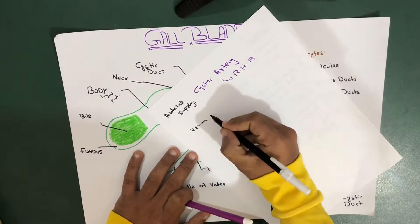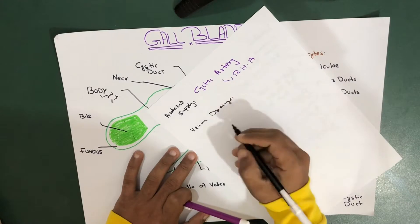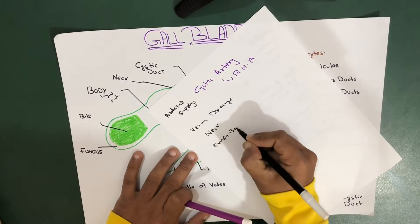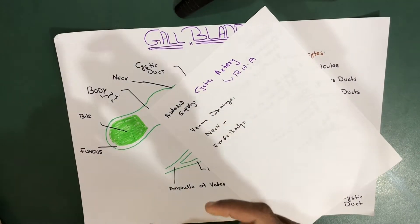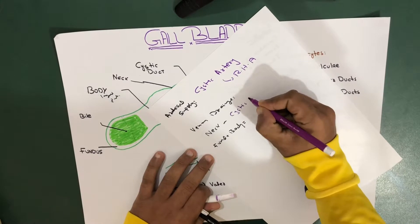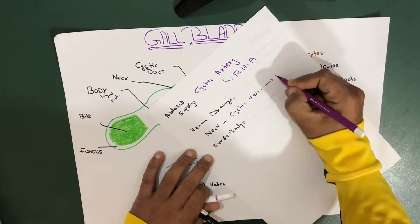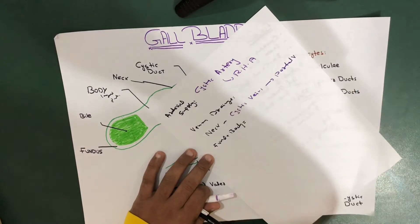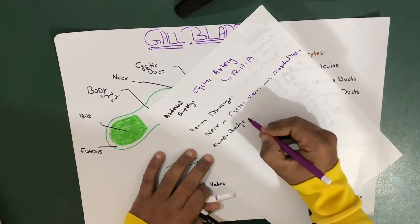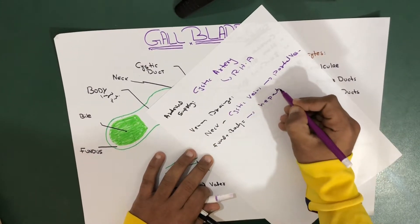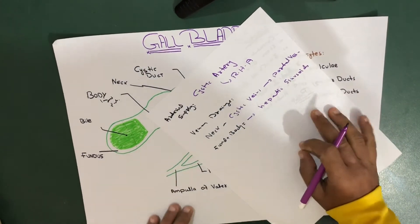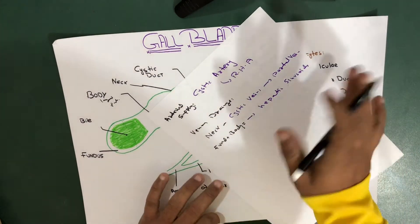The venous drainage is divided: there is different venous drainage for the neck and different venous drainage for the fundus and body. For the neck, the venous drainage is via the cystic veins, which drain into the portal vein. For the fundus and body, their venous drainage goes directly into the hepatic sinusoids, which we'll cover in another lecture on the portal vein.